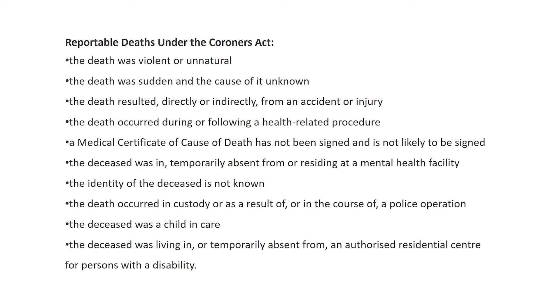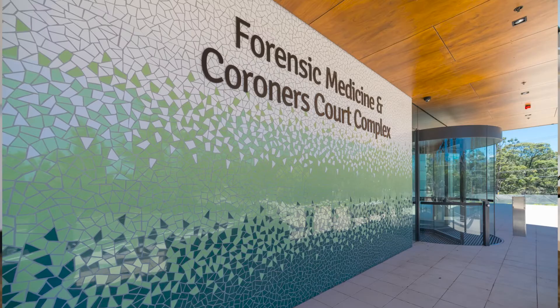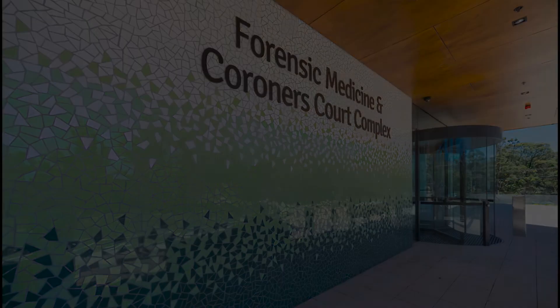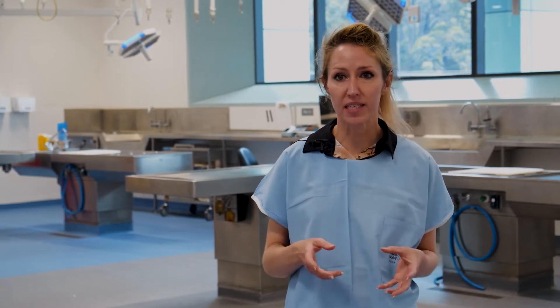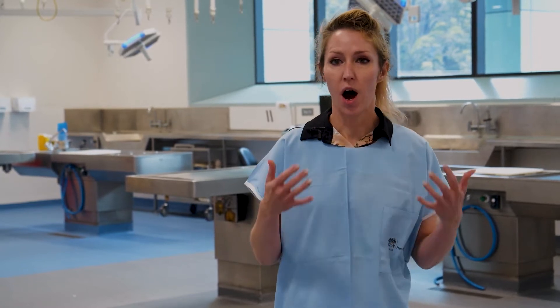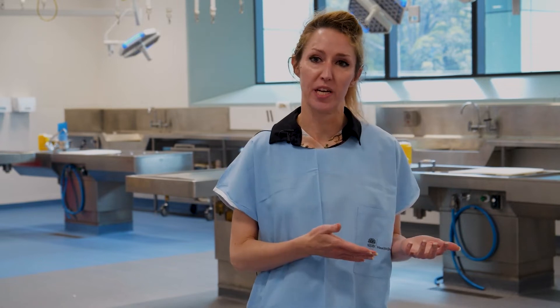A forensic pathologist mainly does autopsies for the coroner. There's a whole variety of deaths referable under the coroner's act, and when these deaths occur we assist the coroner in determining the cause of death. In a nutshell, a forensic pathologist is a doctor for deceased people. If you were ill, you'd see your general practitioner — they'd do some tests and tell you what was wrong. I do the same thing except all of my patients are deceased.